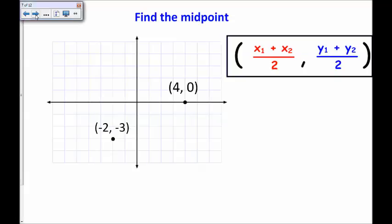Here is an example. Find the midpoint between these two points. So, I will first label this as x1 and y1 and this as x2 and y2. Now, I could have labeled it the other way and that would have been fine.